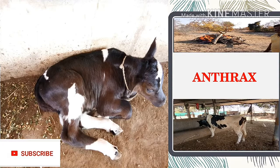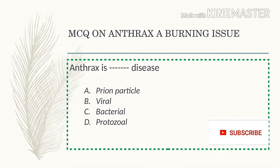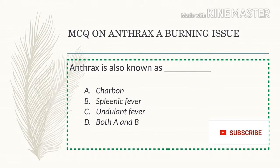The causal organism of anthrax in cattle is Bacillus anthracis. Anthrax is a bacterial disease — it is not caused by a prion particle, virus, or protozoa. The answer is bacterial.